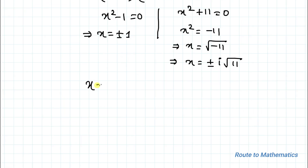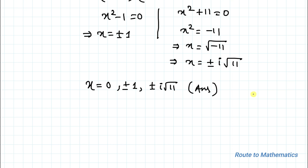Thus all values of x satisfying the given equation are: x = 0, x = ±1, or x = ±i√11. I hope you have understood the solution. Thanks for watching — please subscribe to my channel and click the bell icon for more such interesting questions. Thank you.